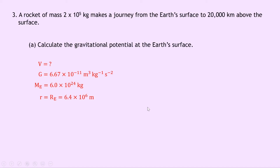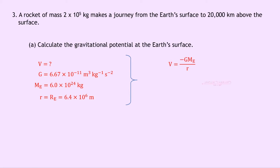That value can be found on the data sheet. Writing down our equation, we get V equals minus GME over R. Substituting in our numbers, we get minus 6.67 times 10 to the minus 11 times 6.0 times 10 to the 24 divided by 6.4 times 10 to the 6. Putting that into your calculator should give an answer of minus 6.25 times 10 to the 7 joules per kilogram.